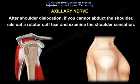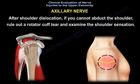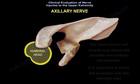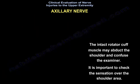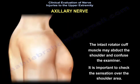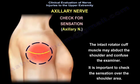After shoulder dislocation, if you can abduct the shoulder, rule out rotator cuff tear and examine the shoulder sensation. There is another scenario when the intact rotator cuff muscle may abduct the shoulder and confuse the examiner. It is important to check the sensation over the shoulder area.